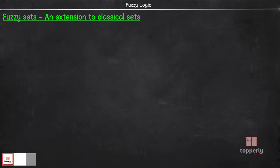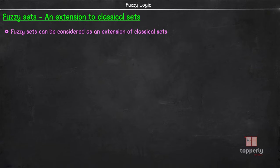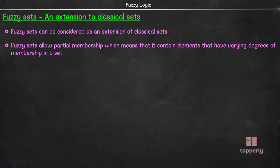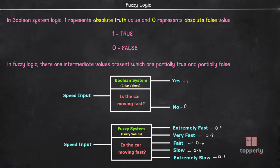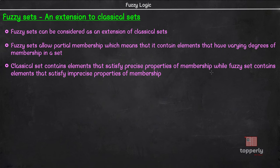We will now move on to Fuzzy sets and extension of classical sets. Fuzzy sets can be considered as an extension and a gross oversimplification of classical sets. We can understand Fuzzy sets in the context of set memberships. Basically, it allows partial membership, which means it contains elements that have varying degrees of membership in a set. In the previous example under Fuzzy Logic systems, we saw varying degrees of membership like 0.9, 0.8, 0.6, 0.3, and 0.1 in various Fuzzy sets. These represent the partial values and constitute the degree of membership of the input element in each Fuzzy set. Classical sets contain elements that satisfy precise properties of membership, while Fuzzy sets contain elements that satisfy imprecise properties of membership.